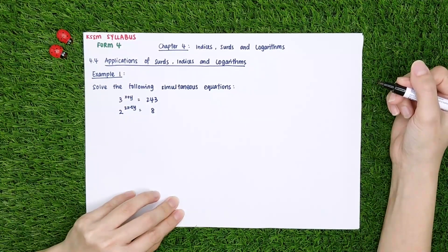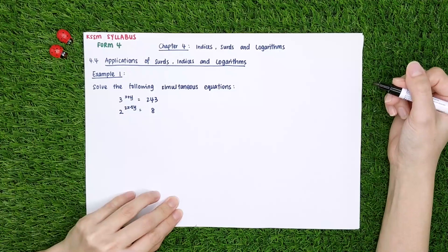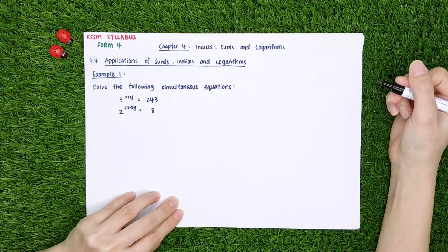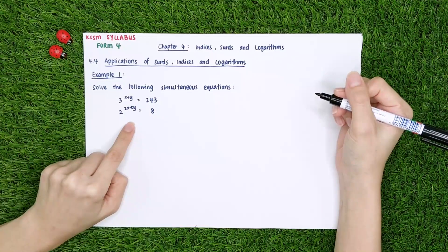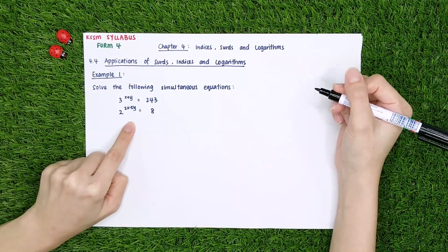Solve the following simultaneous equation. So this is a combined question. It combines chapter 3 and chapter 4. From these two index equations, we want to find out two linear equations. So from this,